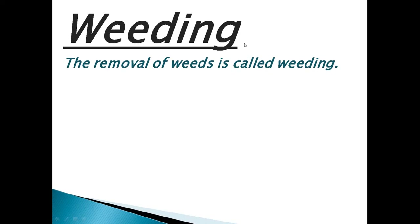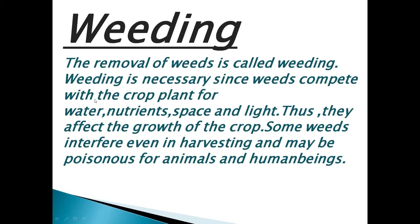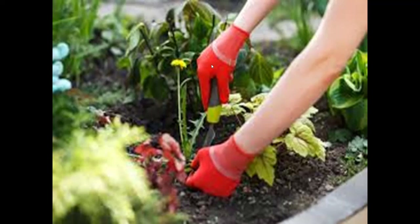Weeds are sometimes poisonous and may contaminate the harvest, so we need to remove them. The process of removal of weeds is called weeding. Weeding is necessary because weeds compete with crops for water, nutrients, space, and light. Some weeds interfere with harvesting and may be poisonous for animals and humans. Weeding can be done manually using a khorpi to remove unwanted plants.